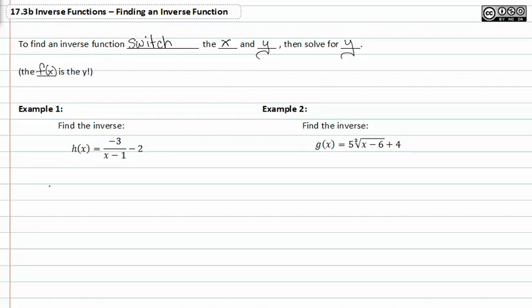This h is basically like f, it has the same form, so we're going to say h is like y and it's equal to negative three over x minus one minus two.